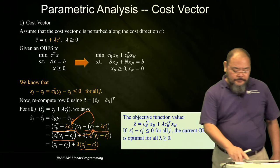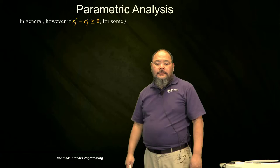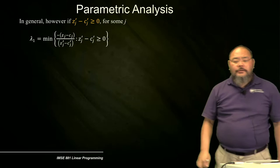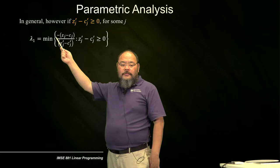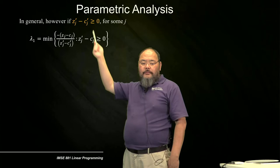If, however, for some J, Z_prime_J minus C_prime_J is greater than or equal to zero, then we choose lambda one as the minimum over J of negative(ZJ minus CJ) divided by (Z_prime_J minus C_prime_J), where Z_prime_J minus C_prime_J is positive. We choose the minimum — that is lambda one.